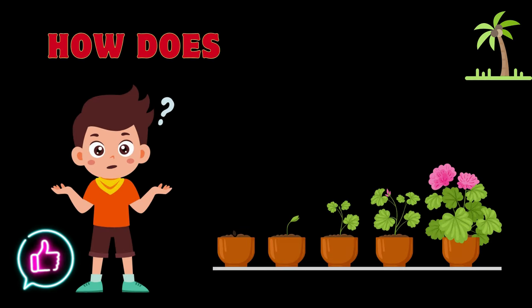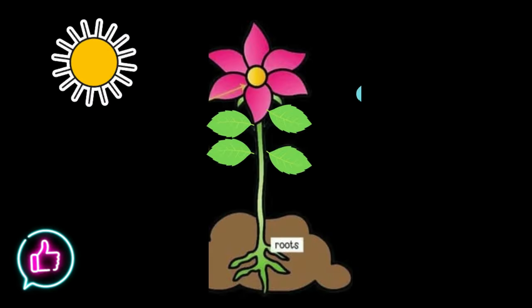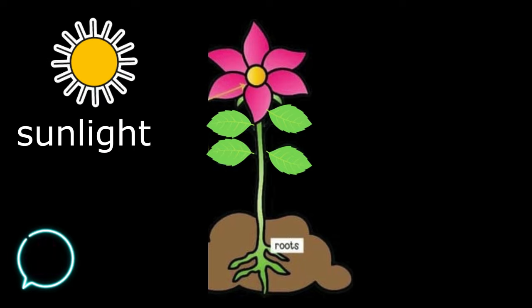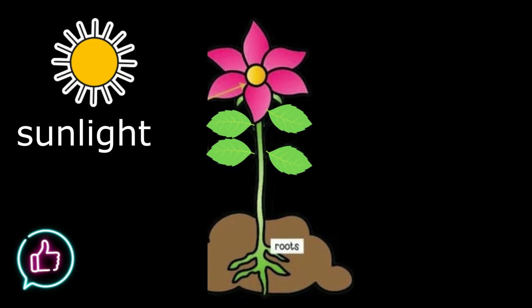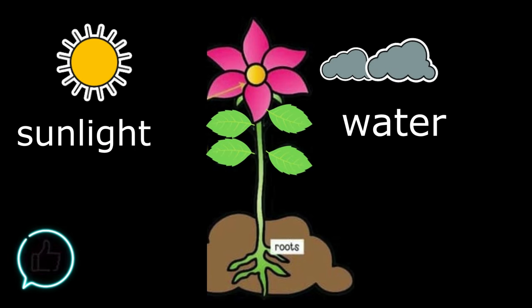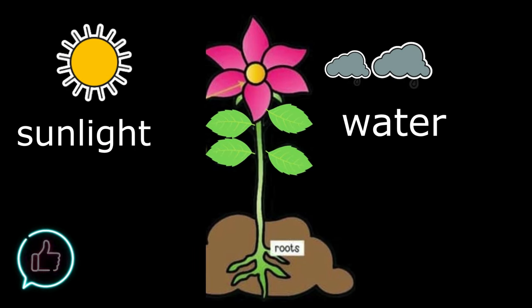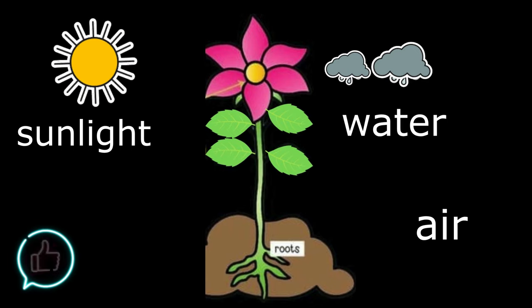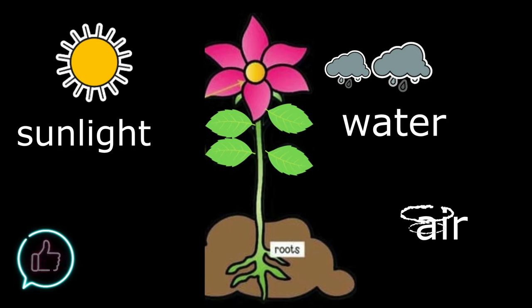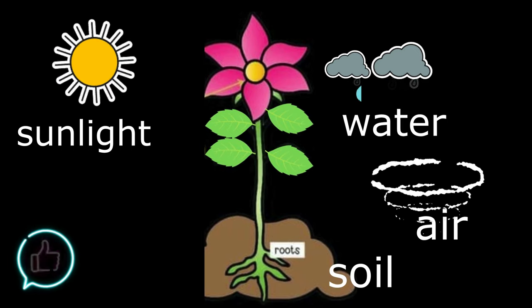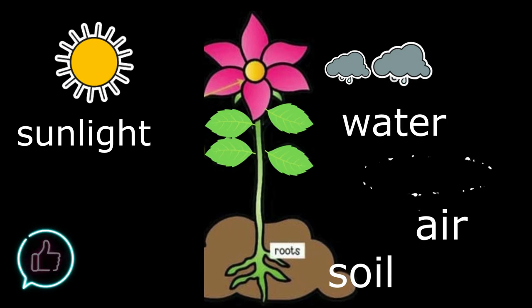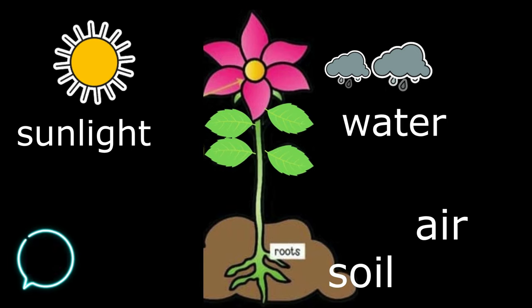How does a plant grow? They need sunlight, water, air, and soil.